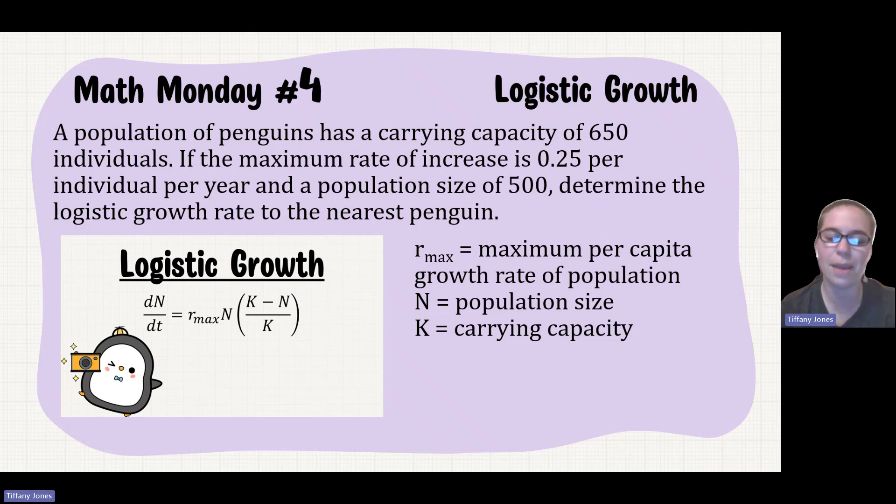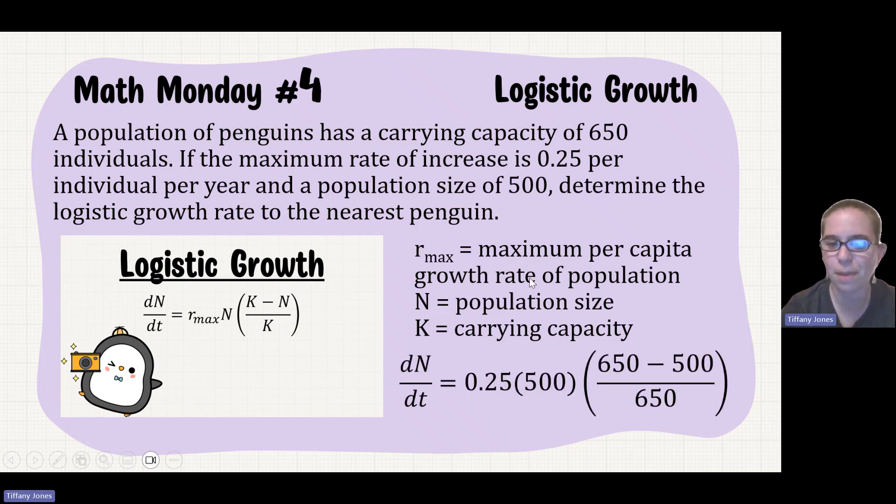We're first going to sub in each of these different variables. We see that 0.25 is my r. I know that 500 is my population size, so we sub that in for N. And then I have 650, which is my carrying capacity, that I'll sub in for my K value.